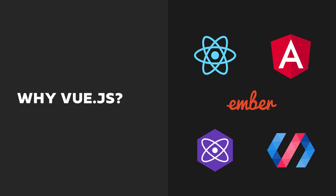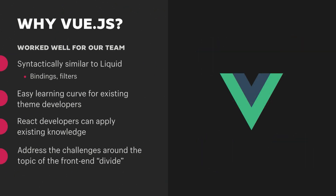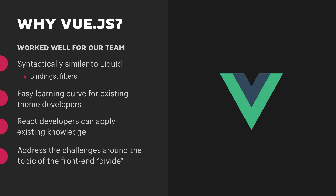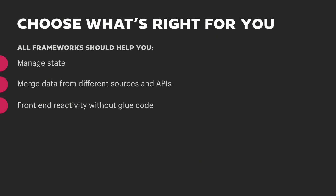Why did we choose Vue.js? There are a lot of great alternatives — React and Angular being the big ones. The short answer is that Vue.js worked well for our team. It's syntactically very similar to Liquid, with similar bindings and even filters, which meant traditional theme developers had a very easy time onboarding with the technology. React developers could also apply much of their existing knowledge. It helped address some challenges around the front-end divide, so both types of developers could bring all their skills to the table. All of these frameworks provide largely the same functionality — managing state, merging information from multiple APIs — so you should choose what's best for your team.